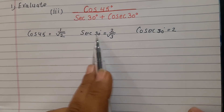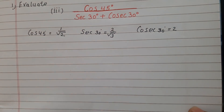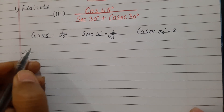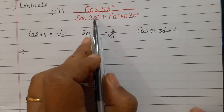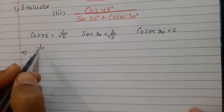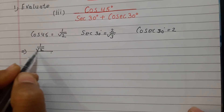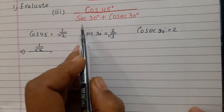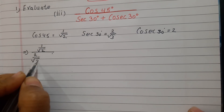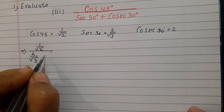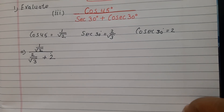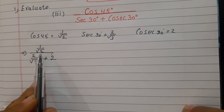We have checked the three values from the table. Now we will put them into the question and solve it. Cos 45 is 1 by root 2, divided by sec 30 which is 2 by root 3, plus cos 30 which is root 3 by 2.